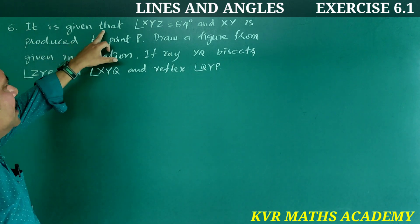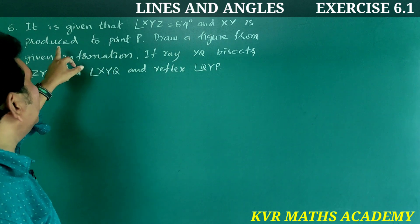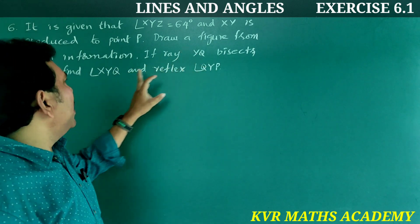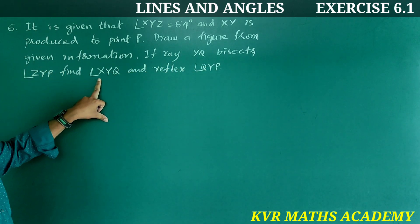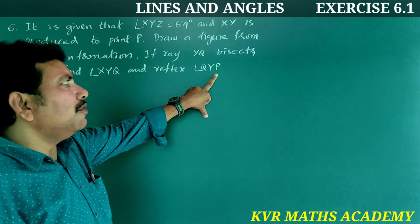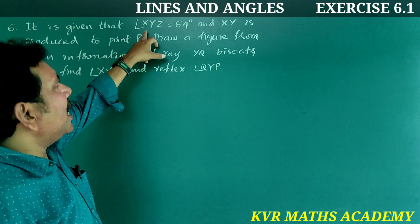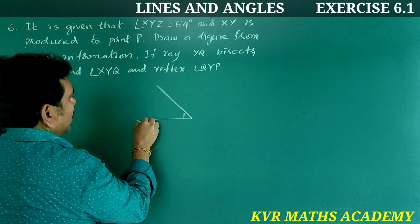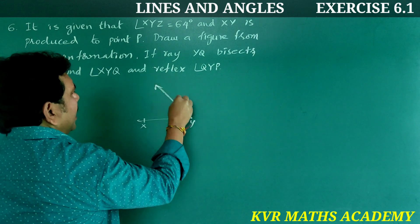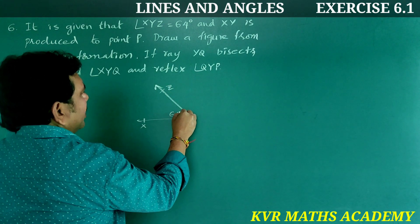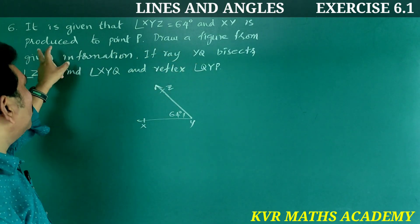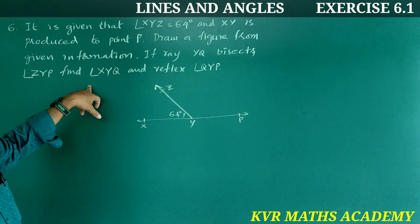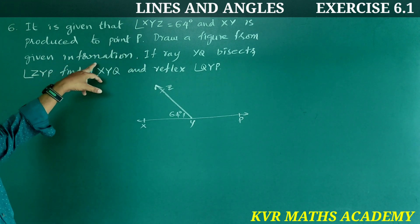Next, sixth question: It is given that angle XYZ is equal to 64 degrees, and XY is produced to point P. Draw a figure from the given information. So angle XYZ equals 64 degrees, and XY is produced to P.